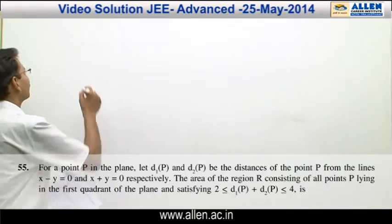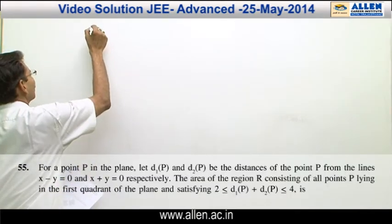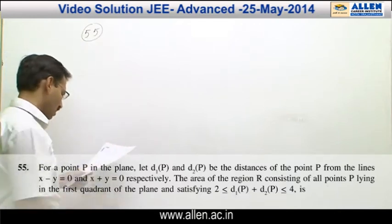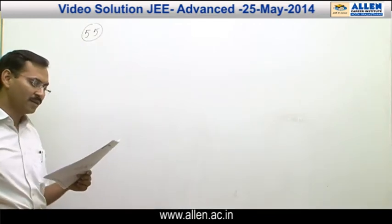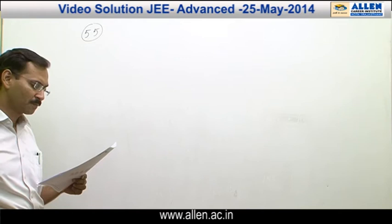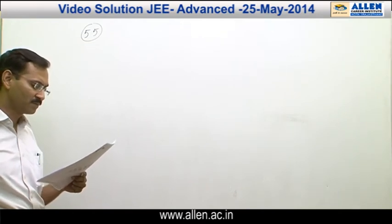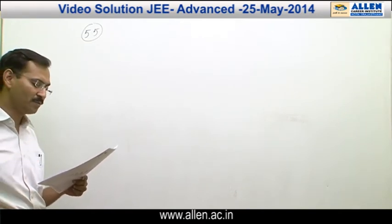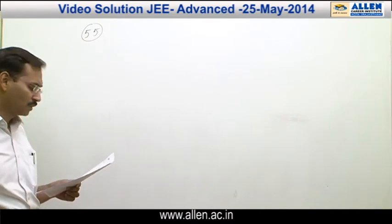Question number 55. We have to calculate the area of region R consisting of all the points P satisfying the condition dP1 plus dP2 lying between 2 and 4.